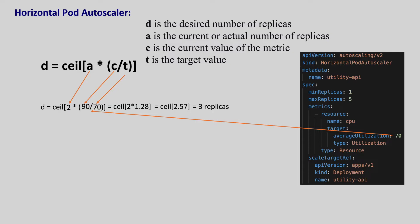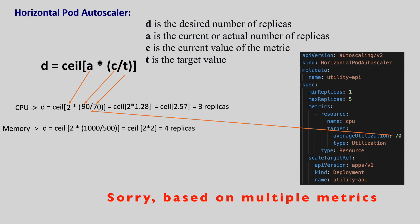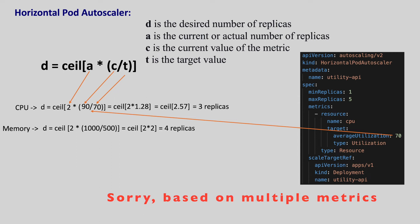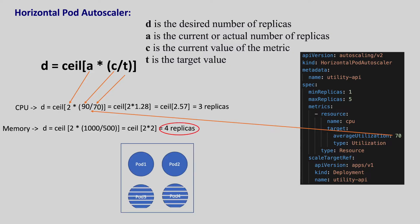We can even define multiple metrics for scaling, like based on CPU and memory. When autoscaling is based on multiple metrics, the autoscaler calculates the replica count for each metric individually and then takes the highest value — in this case, four replicas. In summary, the purpose of HorizontalPodAutoscaler is to calculate the replica count that brings the current metric value as close as possible to the target value.